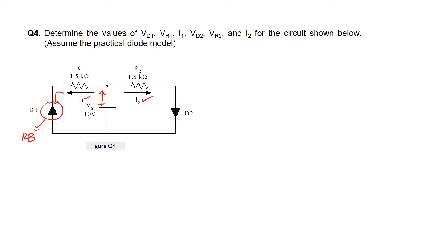Whereas for the current I2 that goes to D2, it enters from the positive terminal of D2 first. Hence, diode D2 will be forward biased.